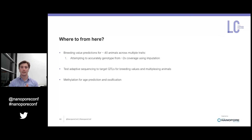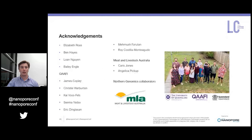Another thing we're hoping to incorporate into this pipeline is using methylation data — specifically methylation signals — to predict the age of an animal and also predict ossification. Ossification is the premature aging of an animal and impacts the price consumers are willing to pay for beef. If we can incorporate methylation to predict premature ossification, we can realize some increased returns using this methylation information.